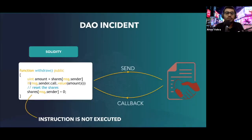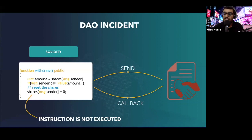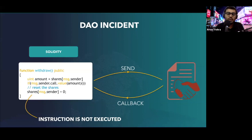The DAO incident led to a fork in Ethereum and created Ethereum and Ethereum Classic — two chains. It's still quite controversial, and many people don't think that should have happened. It was still early days in Ethereum, and the overall ecosystem has definitely evolved after the hack, but smart contract hacks are still popular.